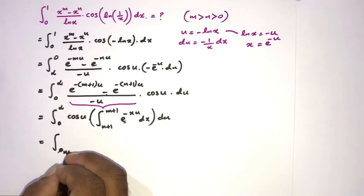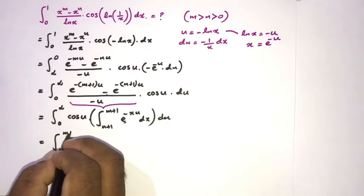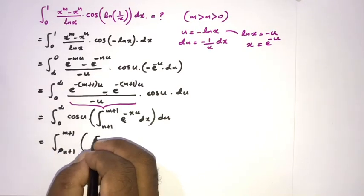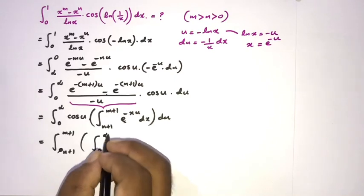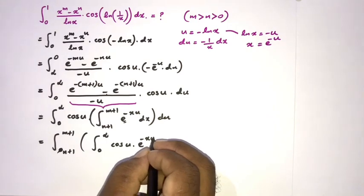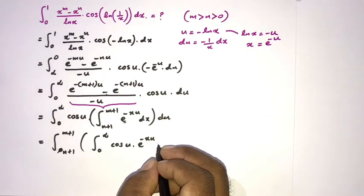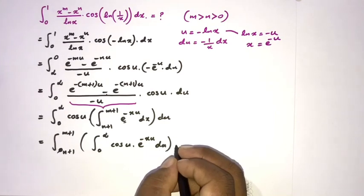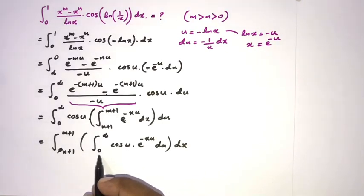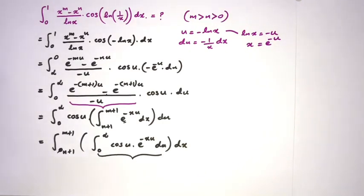This allows us to write the expression as the integral from n+1 to m+1 of the integral from 0 to infinity of cosine of u times e to the minus x times u du dx. The inner integral is recognized as the Laplace transform of cosine of u.